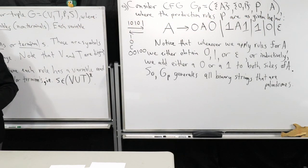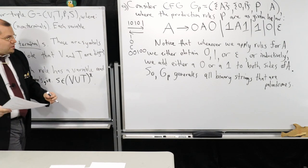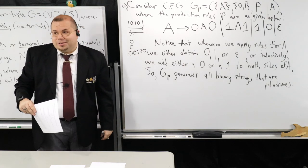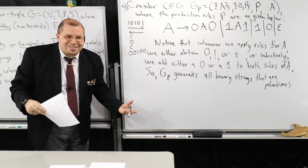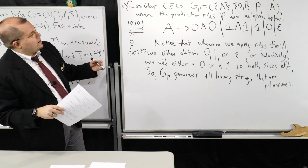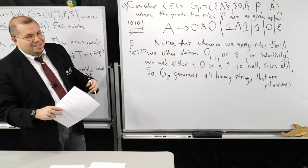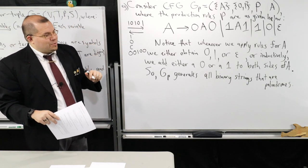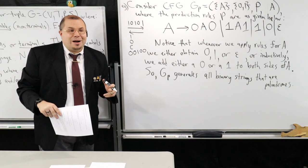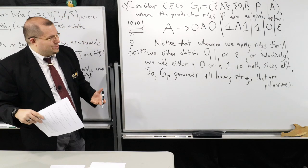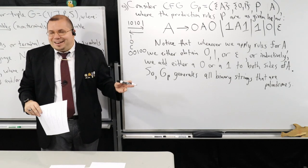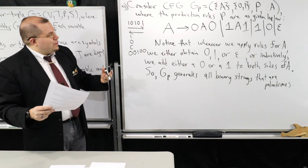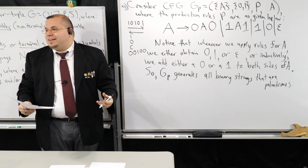This context-free grammar is capable of producing any palindrome out of binary symbols — zeros and ones. This should really illustrate for you the expressiveness of context-free grammars. I didn't have to do a whole lot to get this.